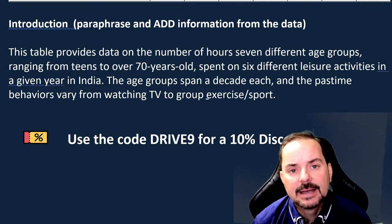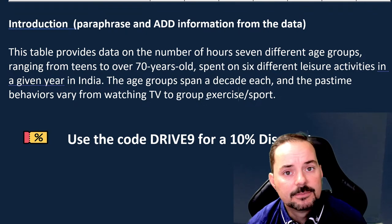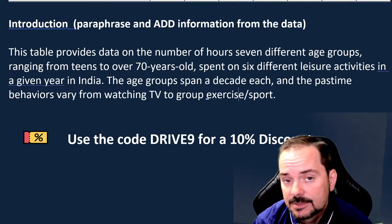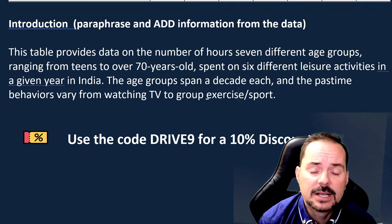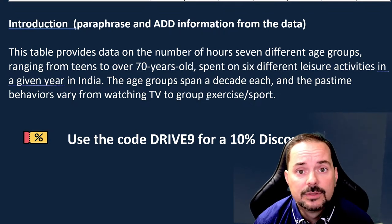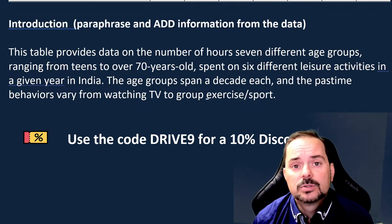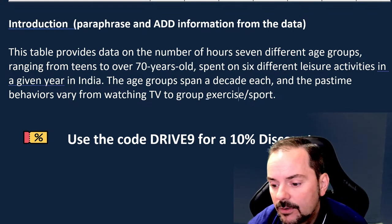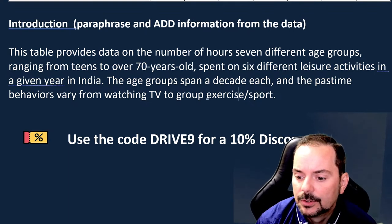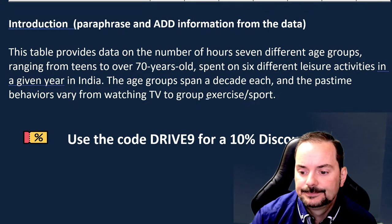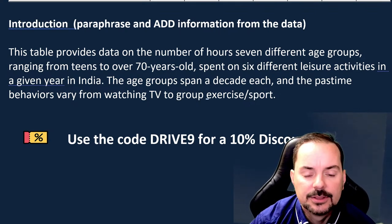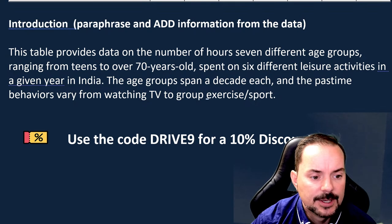You only write about this in the past if it's in the past. If this is data from 2005, then yes. But we don't know that, so this is present tense — it could be 2023 data. There's no rule that you need to write in the past tense. Always use logic.